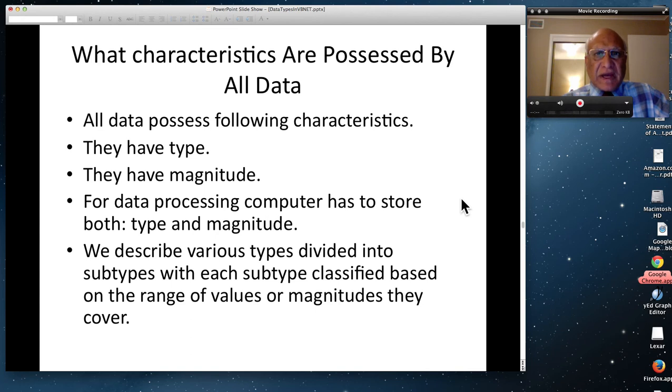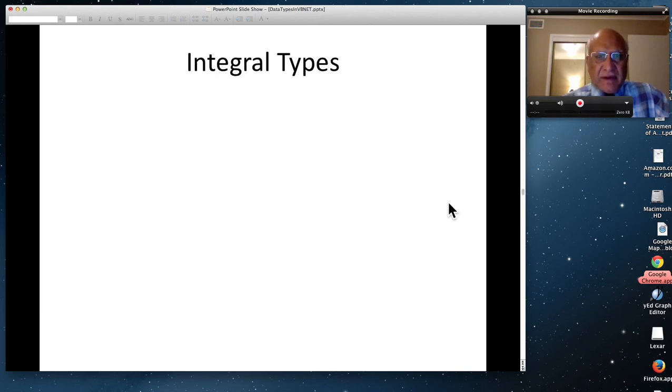Like integral type has many subtypes. Floating point type has many subtypes. And subtypes are decided based on what maximum value or minimum value they can store. So there is a magnitude difference in each subtype. And magnitude difference changes the number of bytes that are required to store them.